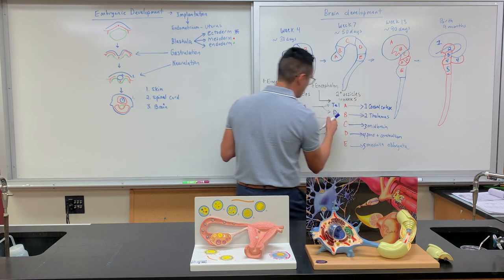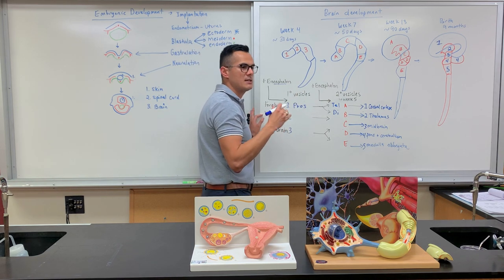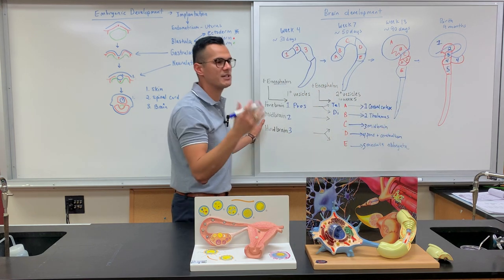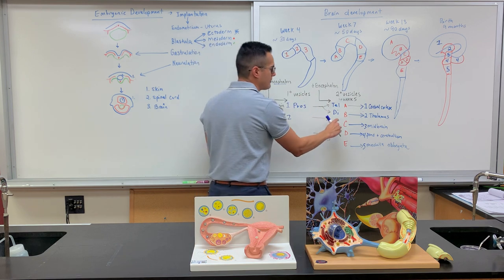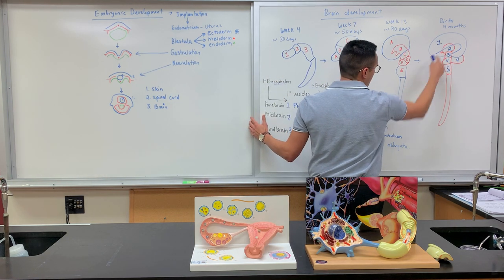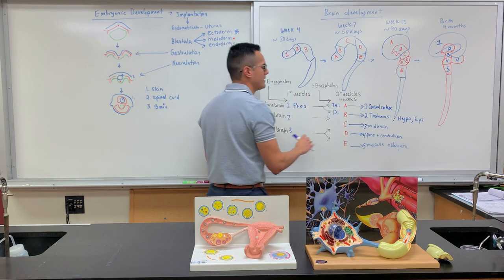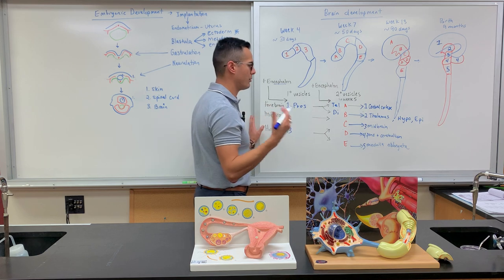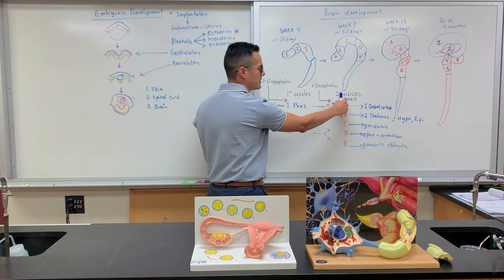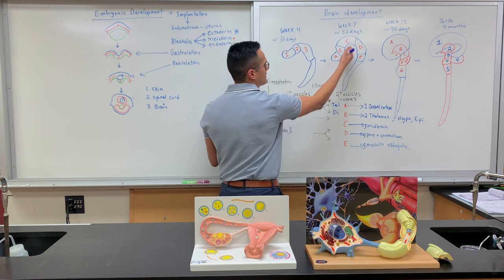The prefix 'tel' refers to the end, because the cerebral cortex is the most developed part of our brain — it's the first thing people think of. This is the part that develops last. So you have the telencephalon and the diencephalon. The diencephalon is composed of the thalamus, but you also have the hypothalamus and the epithalamus. The prosencephalon is the primary vesicle which develops into the telencephalon and diencephalon — the secondary vesicles — around week five.